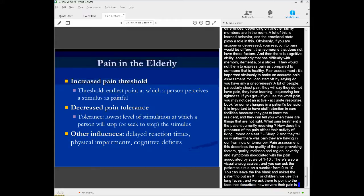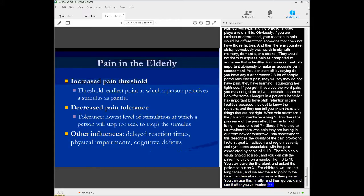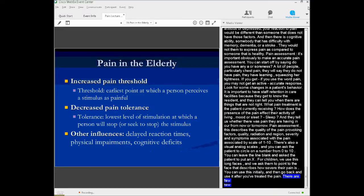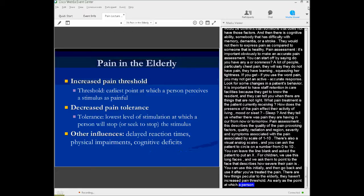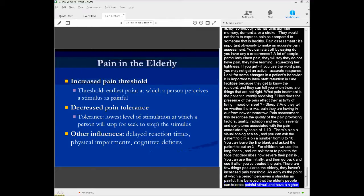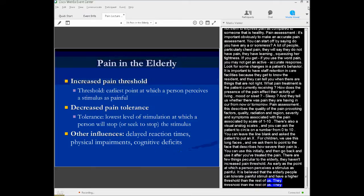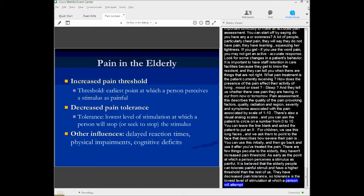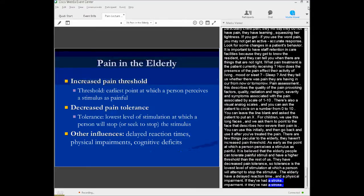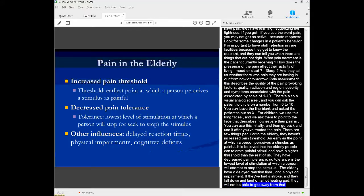There are a few things that are peculiar to the elderly in terms of pain. First of all, they have an increased pain threshold. So a pain threshold is the earliest point at which someone perceives a noxious stimulus as being painful. And it's believed that elderly people can tolerate painful stimuli, have a higher threshold than the rest of us. They have decreased pain tolerance. So tolerance is the lowest level of stimulation in which a person will stop or attempt to stop the stimulus. And the elderly also have delayed reaction times. They have physical impairments. So if they've had a stroke and they fall down and they land on, for example, a hot heating pad or something, they're not going to be able to get away from that because of their inability to move. And then they have cognitive defects, like I mentioned.